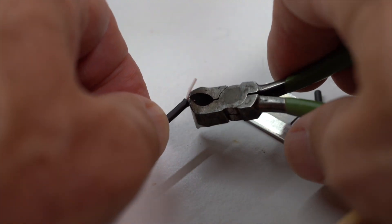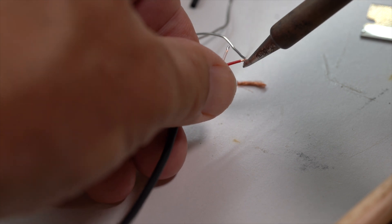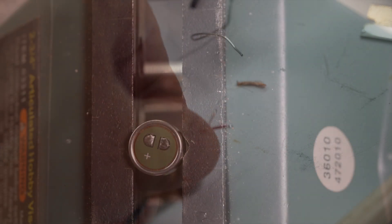Now strip back just a little bit of the red and white wires. When we tin them, the insulation will naturally pull back further due to the heat of the soldering iron.